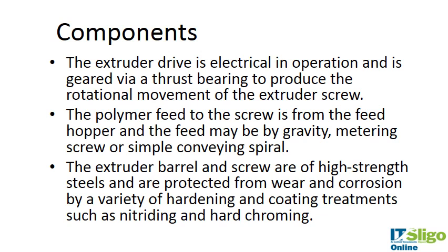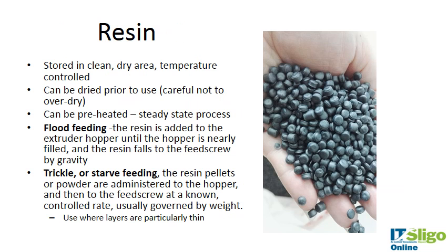Other critical parameters include the distance to the water cooling bath, whether it's a single or double barrel, melt flow index, shrinkage, and cost. The extruder drive is electrical and geared via thrust to produce the rotational movement of the extruder screw. The polymer feed is from the feed hopper and may be gravity, metering, or simple conveying spiral. The barrel and screw are high-strength steel, protected from wear and corrosion using hardening and coating treatments.